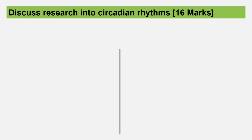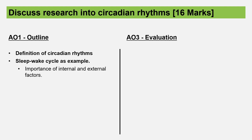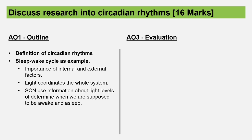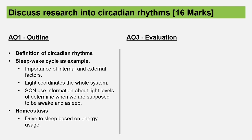We're going to start with 'Discuss research into circadian rhythms' for 16 marks. For the outline we're going to go for a definition of circadian rhythms, use the sleep-wake cycle as our main example, talk about the importance of internal and external factors, and talk about light as the thing that coordinates the entire system. We'll then discuss the suprachiasmatic nucleus, which uses information about light levels to determine when we're supposed to be awake and asleep. We'll also cover the role of homeostasis — in the absence of light, homeostasis will maintain our circadian rhythm. We'll finish the outline with a very brief second example, core body temperature, about two sentences just to demonstrate breadth.